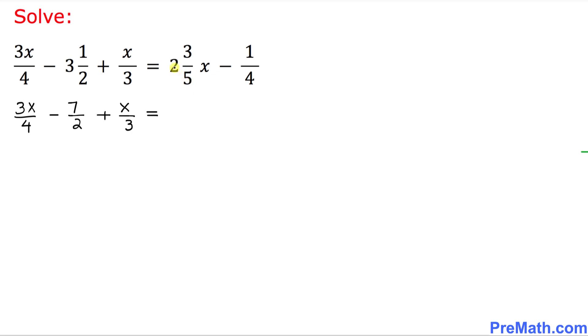2 times 5 is 10 plus 3 is 13 over 5x minus 1 over 4.